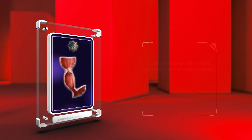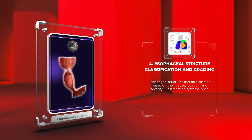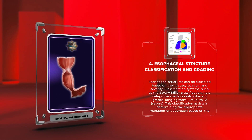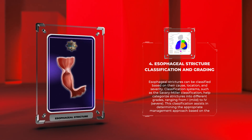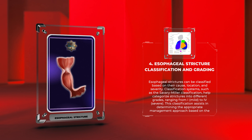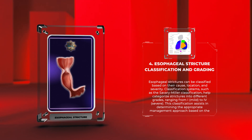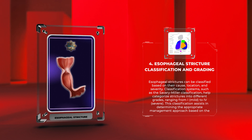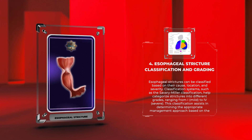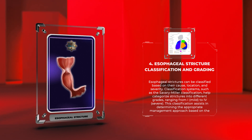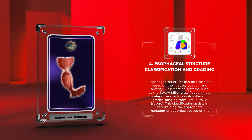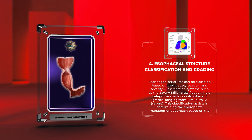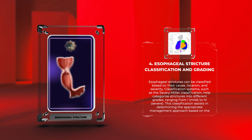Esophageal strictures can be classified based on their cause, location, and severity. Classification systems such as the Savary-Miller classification help categorize strictures into different grades, ranging from I (mild) to IV (severe). This classification assists in determining the appropriate management approach based on the severity of the stricture.